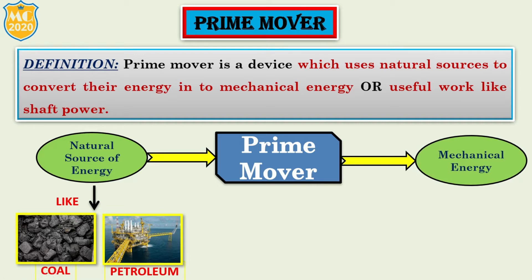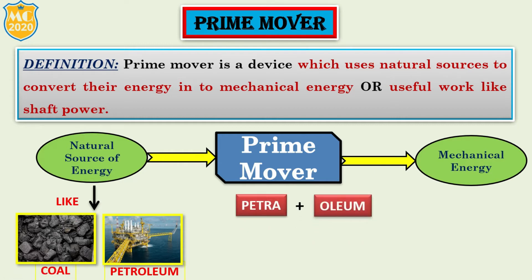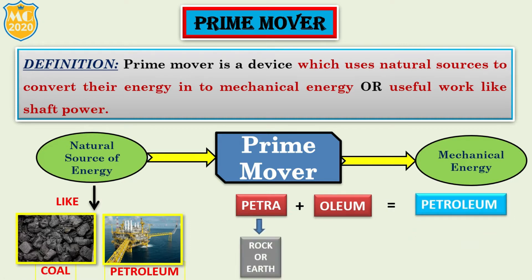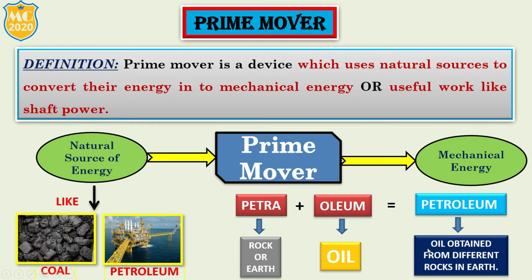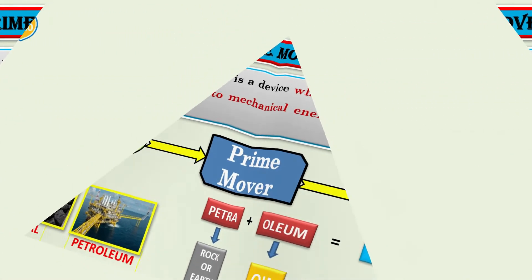These natural sources convert their energy into mechanical energy — that is the prime mover. Now there are useful words like petroleum. Petroleum has two words: the first is 'petra' and the second is 'oleum.' Petra means rock or earth, and oleum is simply oil. So the meaning of petroleum is oil obtained from rocks in the earth.